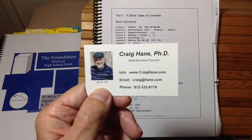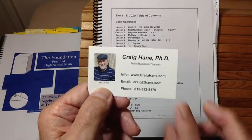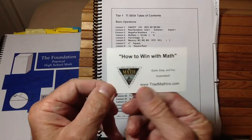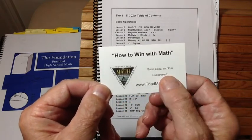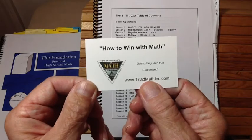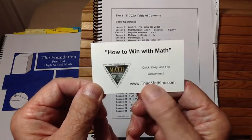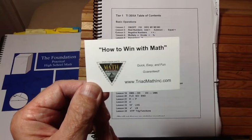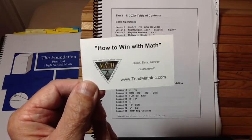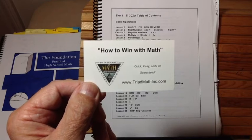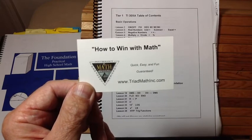But lots of information there. Because our goal is to teach your student how to win with math. That's sort of our motto. How can you win with math? Quick and easy. And, of course, it's guaranteed that you can do it. Our main website is triadmathinc.com. A ton of information there as well. And we also have, as you probably know, homeschoolmathematics.com. We have a lot of different websites, depending on the audience. But it's all basically the same message.